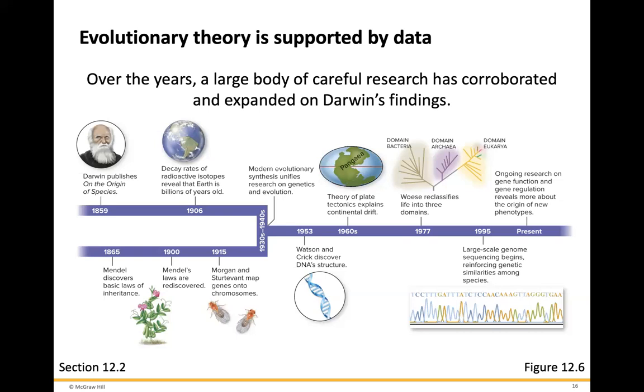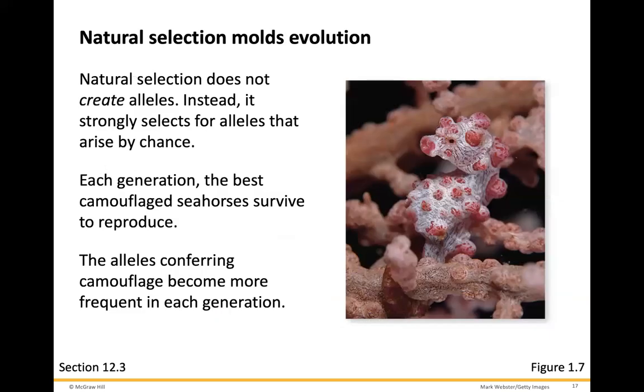How mutations within the DNA lead to these evolutionary changes. Natural selection does not create alleles; instead, it strongly selects for alleles that arise by chance each generation. The best camouflage seahorses survive to reproduce — this seahorse is blending into the coral so that it doesn't get eaten by a predator. The alleles conferring camouflage become more frequent within each generation because the ones that can camouflage survive and increase the overall gene pool for those alleles.